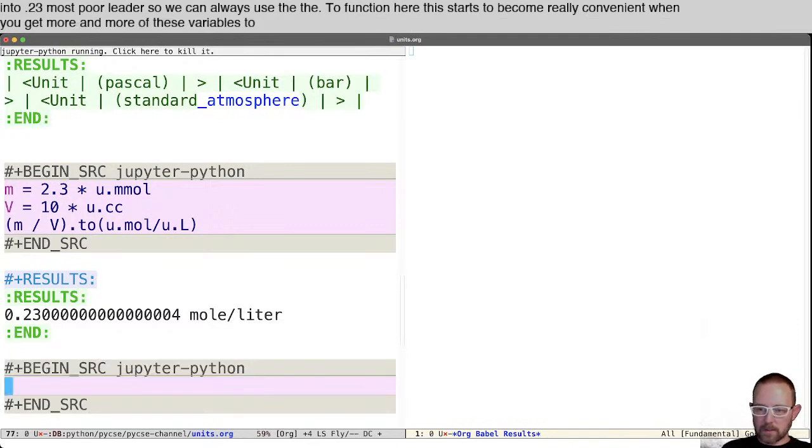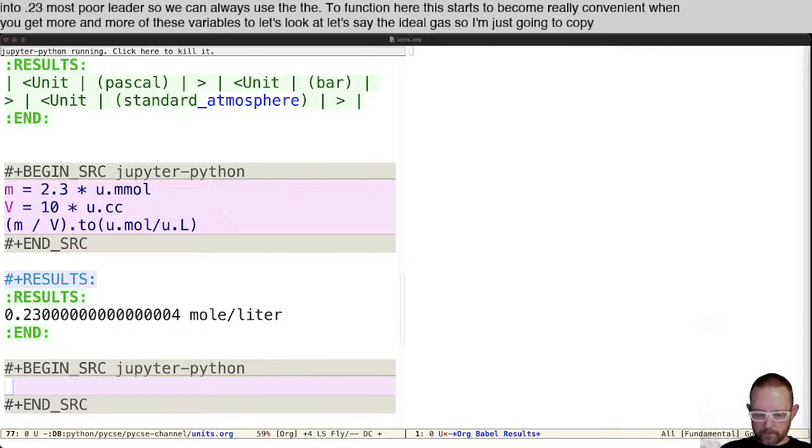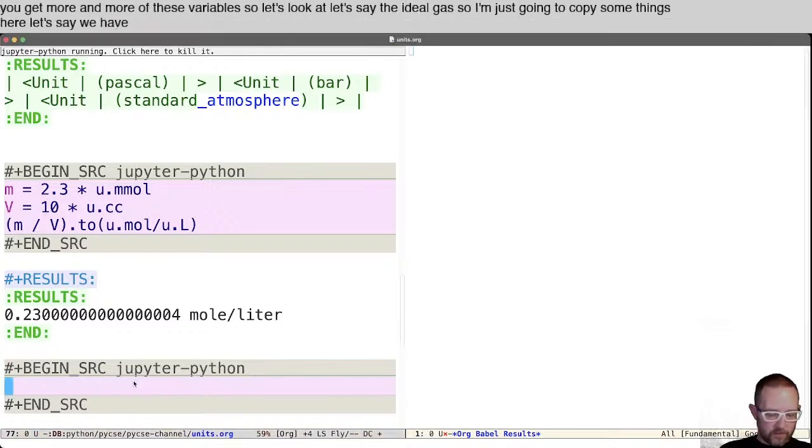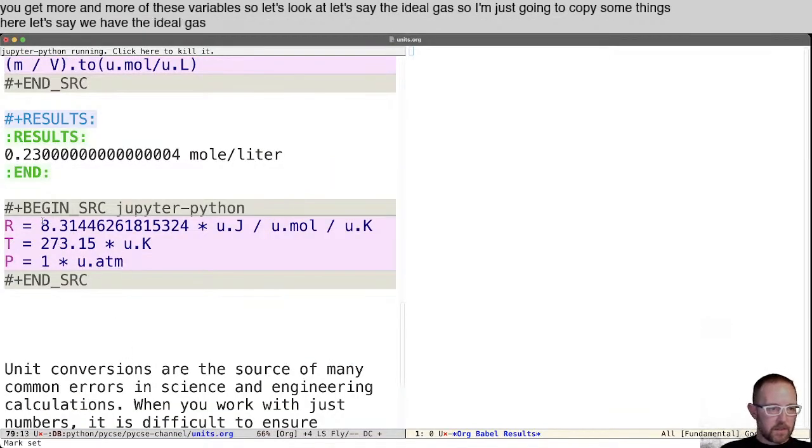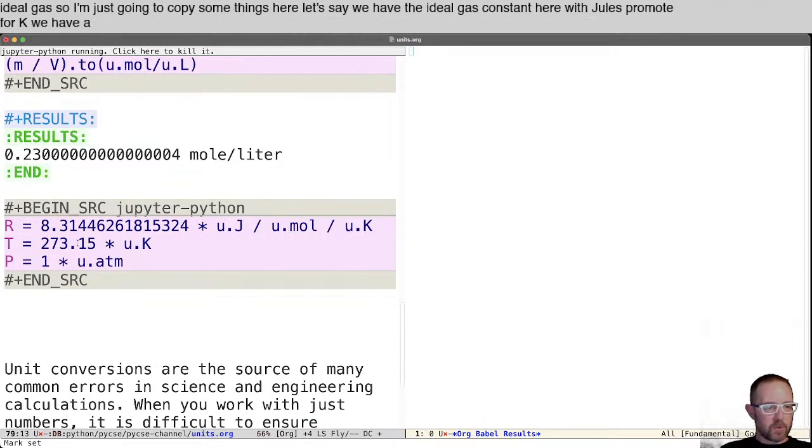So let's look at, let's say the ideal gas. So I'm just going to copy some things. Let's say we have the ideal gas constant here with joules per mole per Kelvin. We have a temperature at 273.15 Kelvin and a pressure, standard pressure at one atmosphere. And we want to know what is the molar volume.